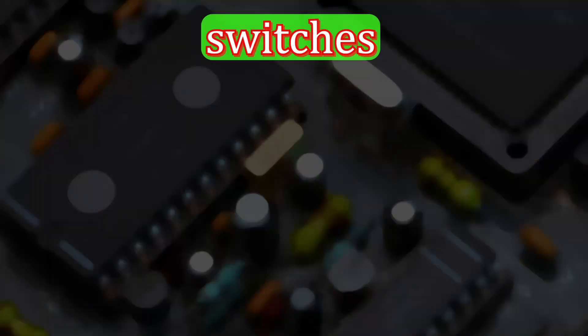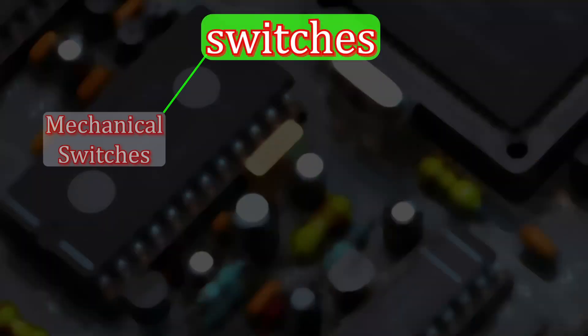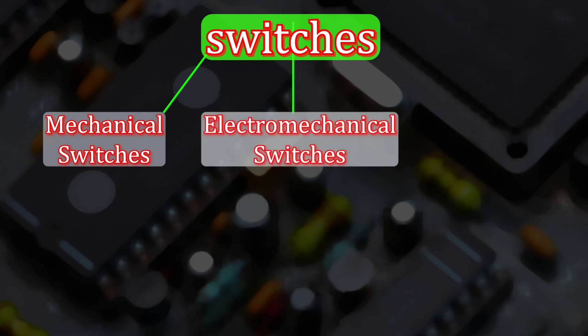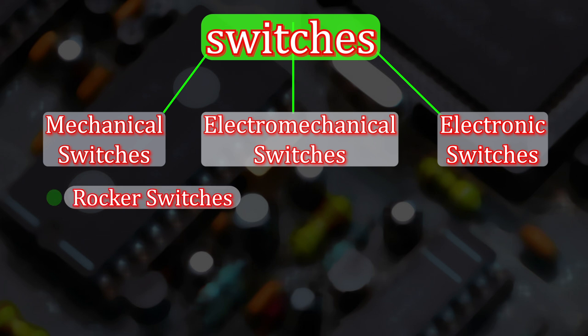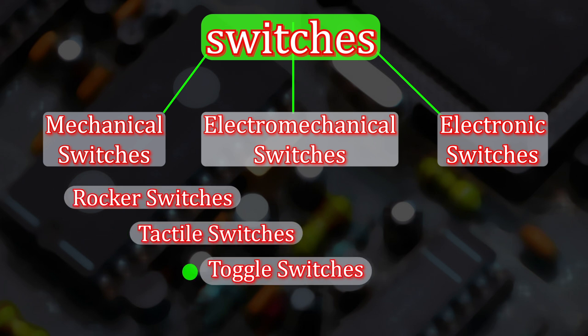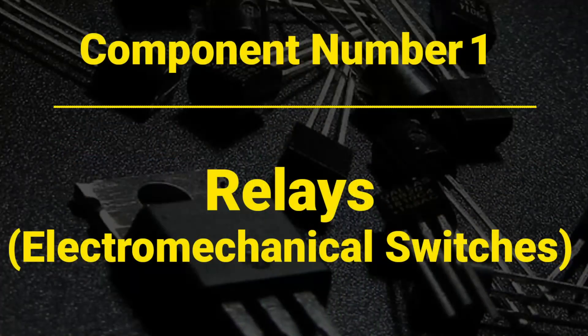In such a case we need a component called a switch. Switches are divided into three main categories: mechanical switches, electromechanical switches, and electronic switches. Mechanical switches are very simple components — like rocker switches, tactile switches, toggle switches, limit switches, and others. I'm moving on to the second type, escaping mechanical switches. Component number one: relays.